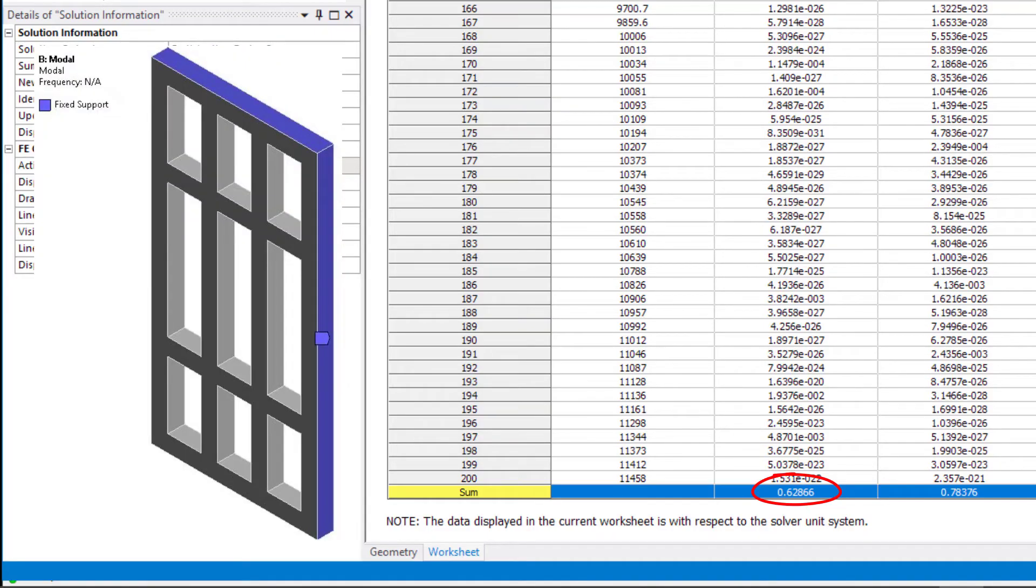In this model, there is the fixed support around the perimeter of the frame, so the material near the fixed constraint won't move and effective mass will be smaller than the actual mass.